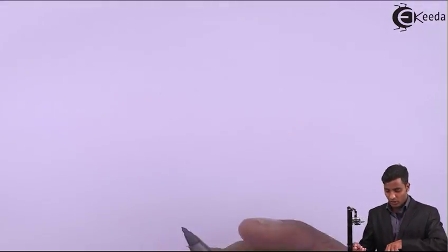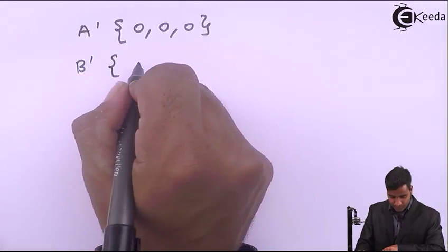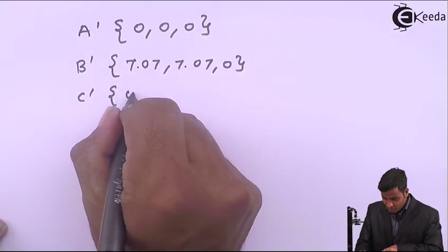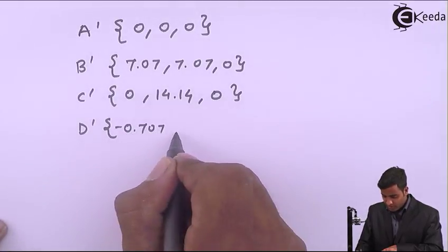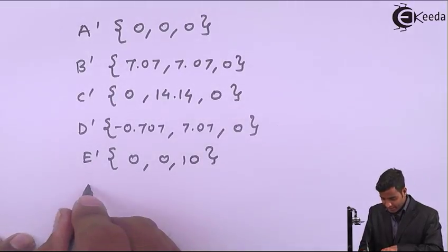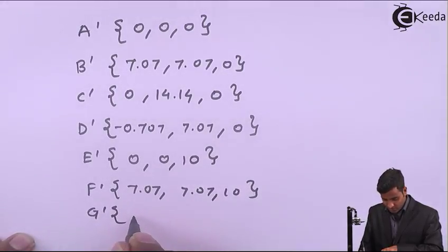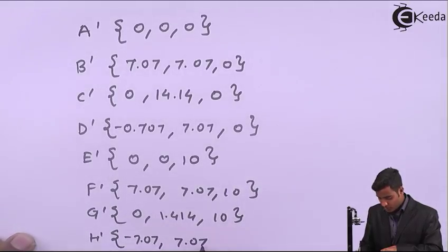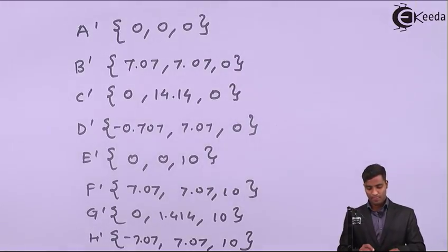Converting into coordinate form: A' = (0, 0, 0), B' = (7.07, 7.07, 0), C' = (0, 14.14, 0), D' = (−0.707, 7.707, 0), E' = (0, 0, 10), F' = (7.07, 7.07, 10), G' = (0, 1.414, 10), H' = (−7.07, 7.07, 10). This is the final position of the cube. This is the solution for this problem. Thank you.